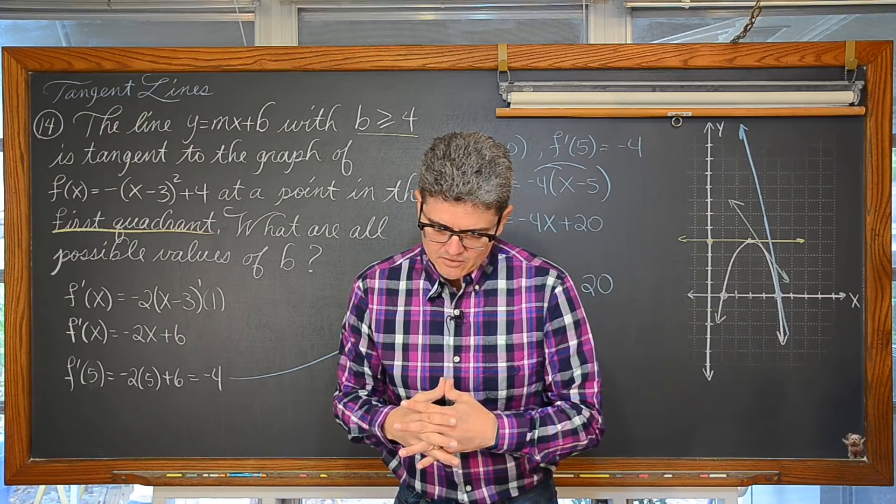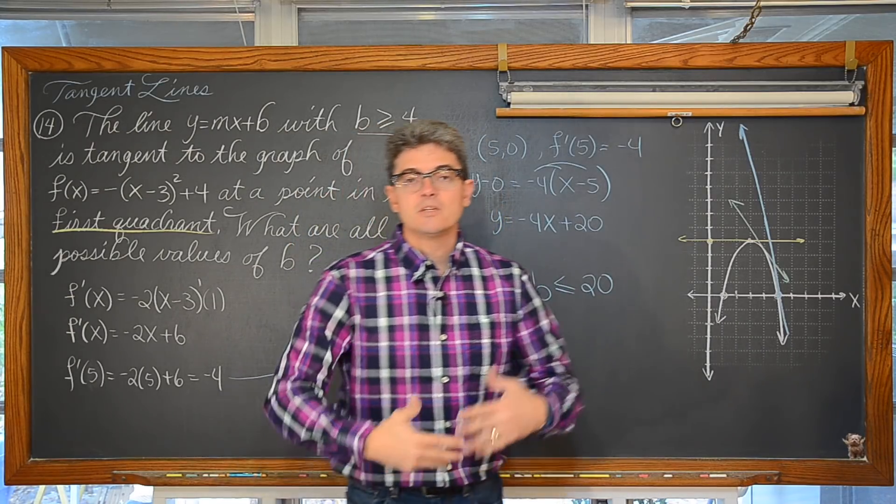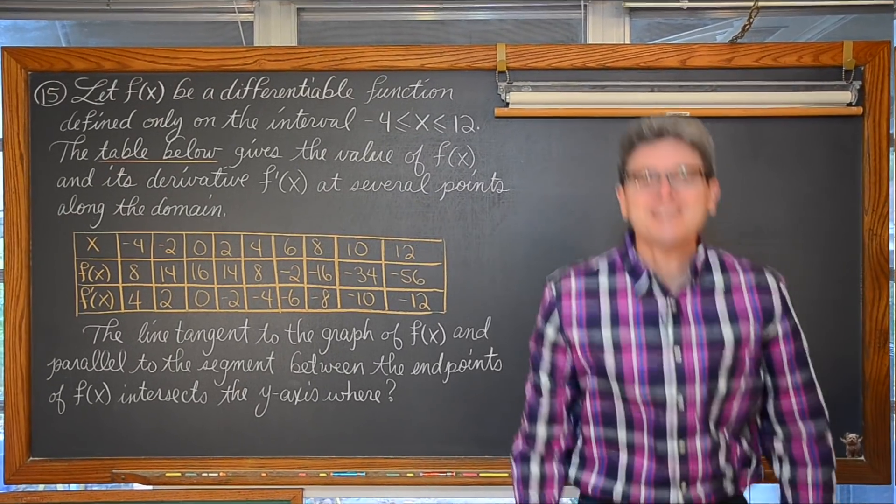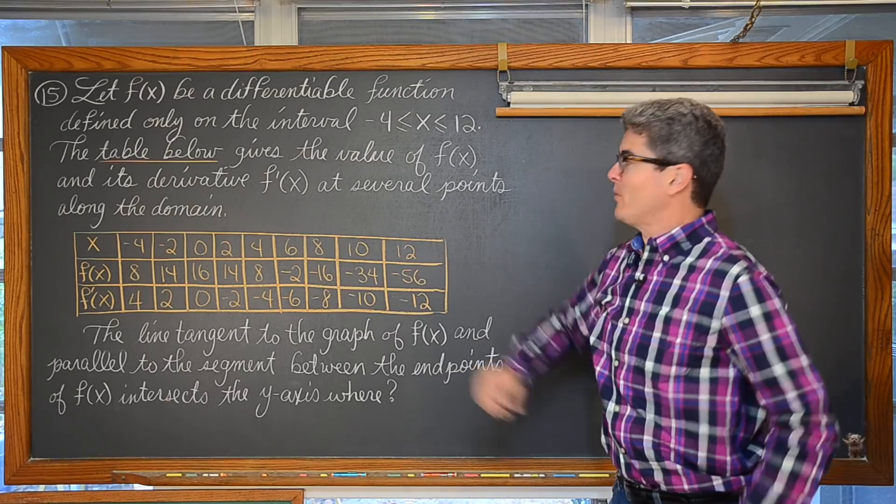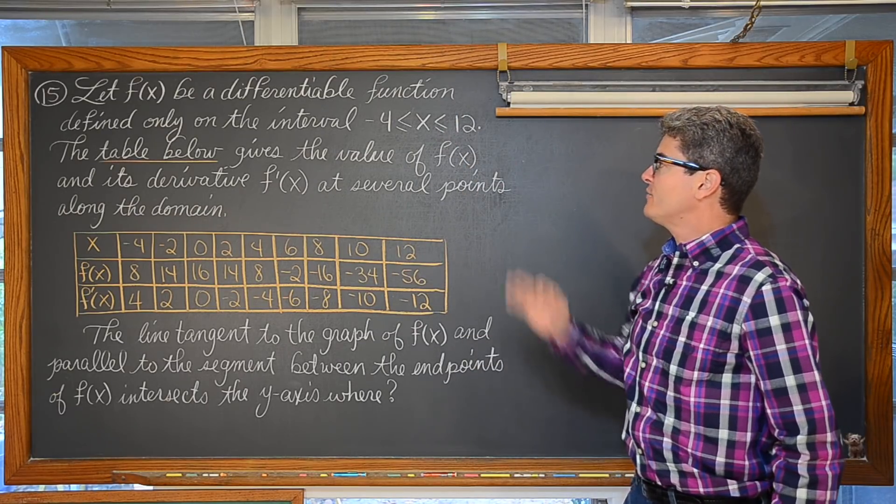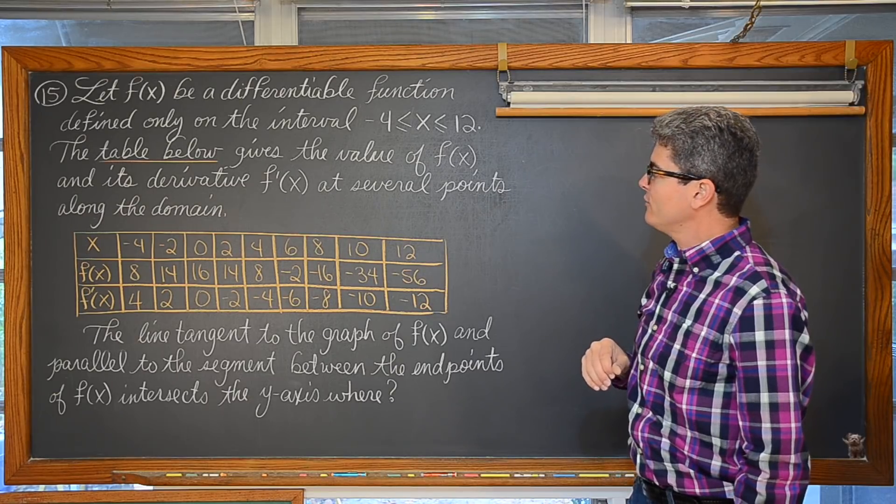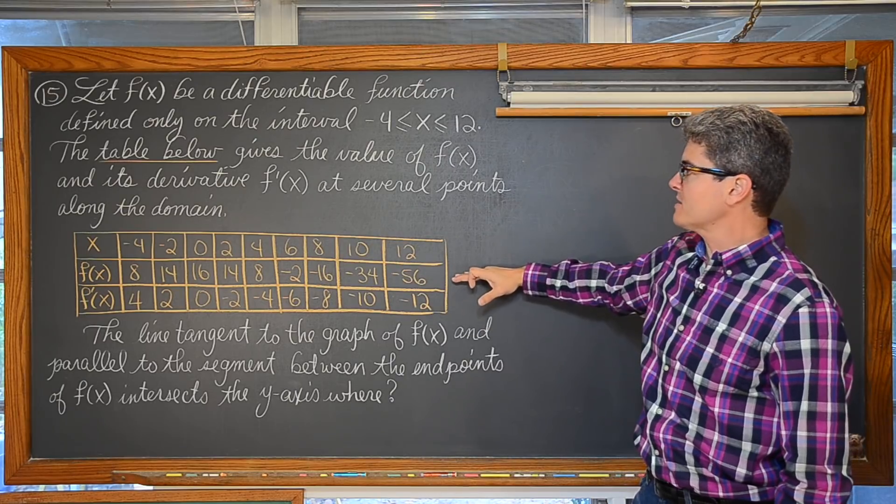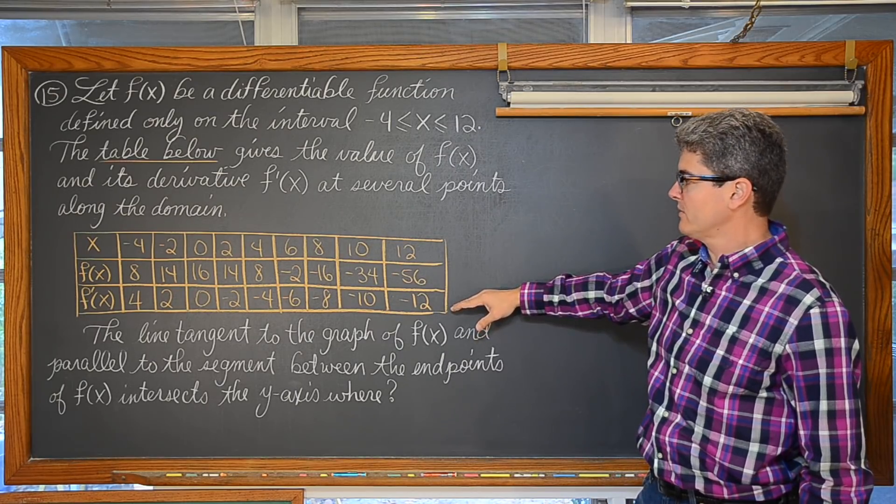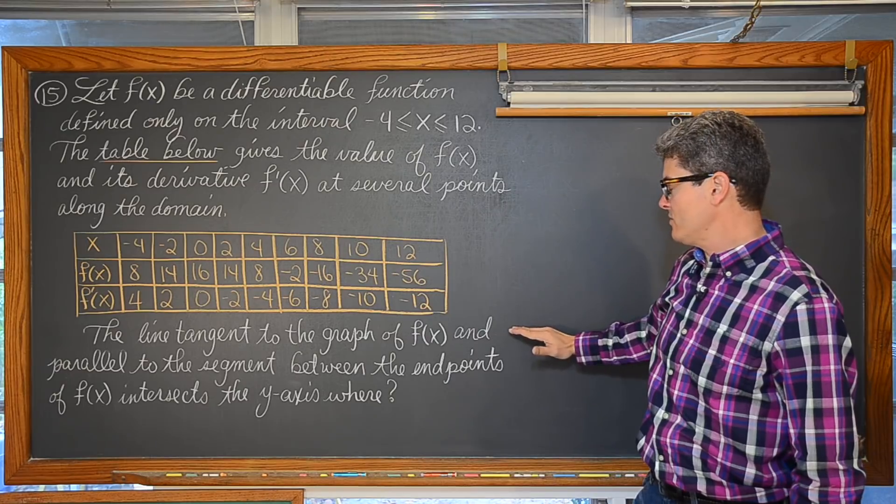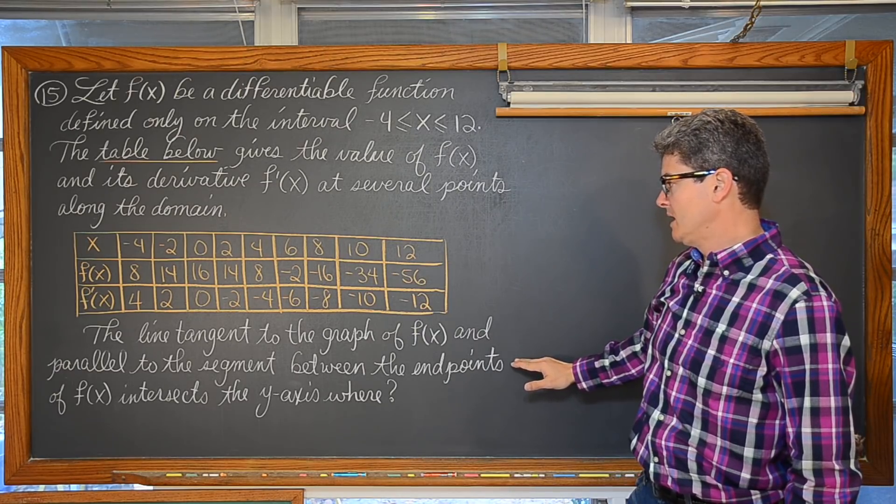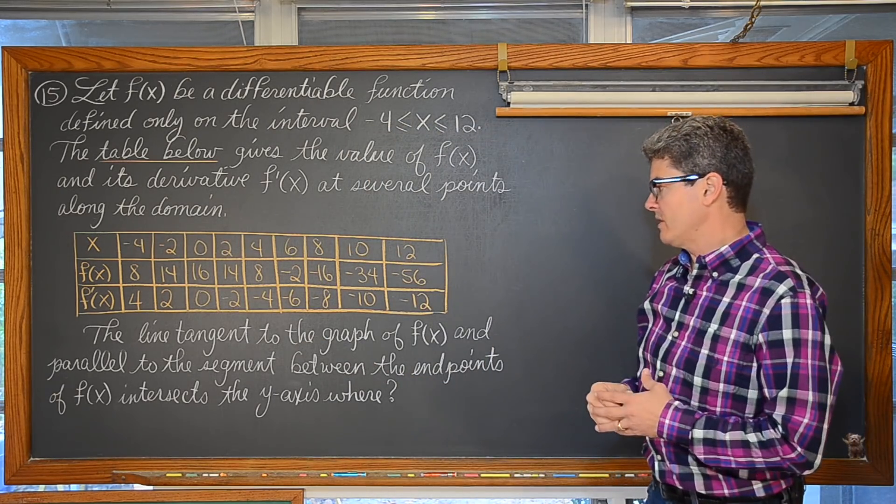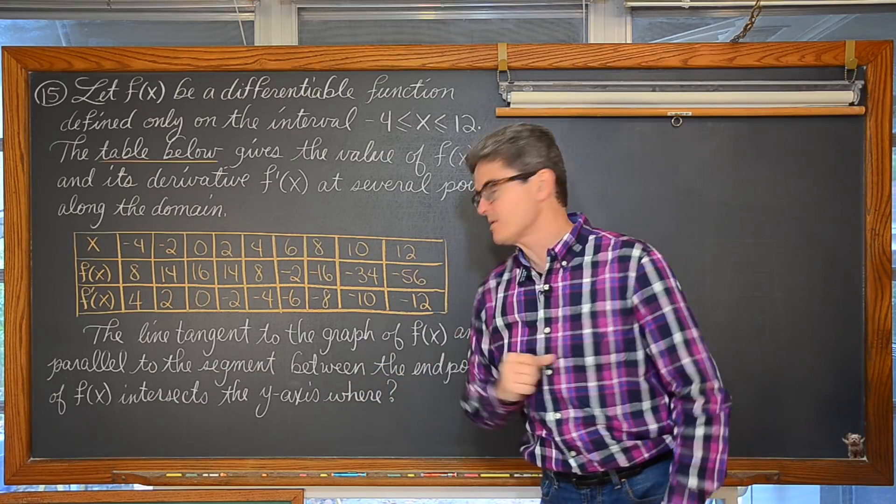The second example is going to involve looking at values of our function and our derivative as it is given to us in a table of values. And for our second example we have let f be a differentiable function defined only on the interval from negative 4 to 12, that closed interval with the equal signs. The table below gives us the values of f and its derivative f' at several points along the domain. The tangent line to the graph of f and parallel to the segment between the end points of our closed interval here of f intersects the y-axis where?